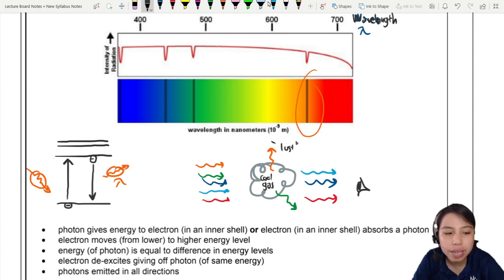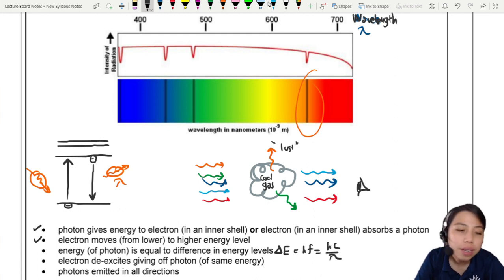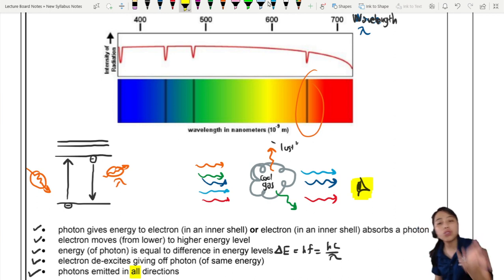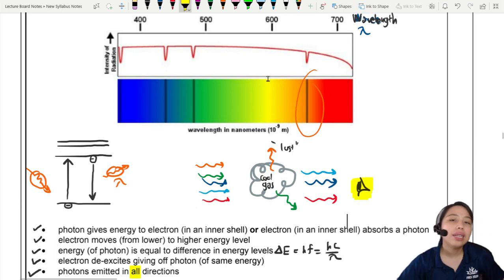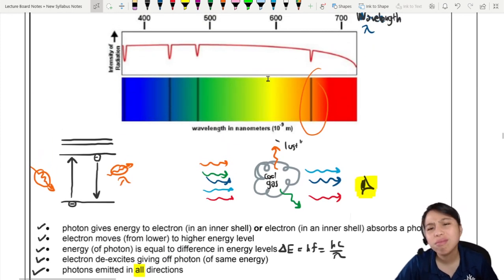So what will you see on the other end? You will see all the colors except those that are lost or scattered somewhere else due to our cool gas. That's the whole idea. Photon gives energy to electron, electron moves to higher energy level. Your photon must match the difference in energy level, calculated from hf or hc over lambda. Eventually you de-excite and emit photons in all directions. That's why it is dark, there's not many photons left.